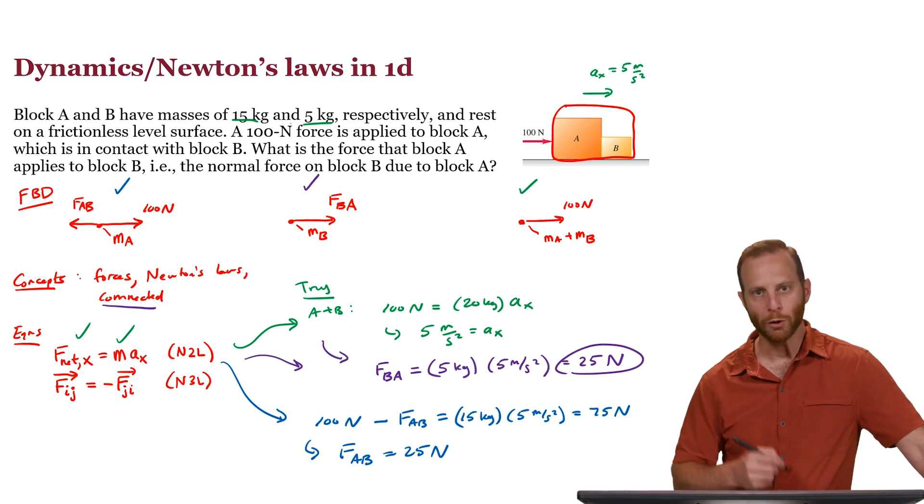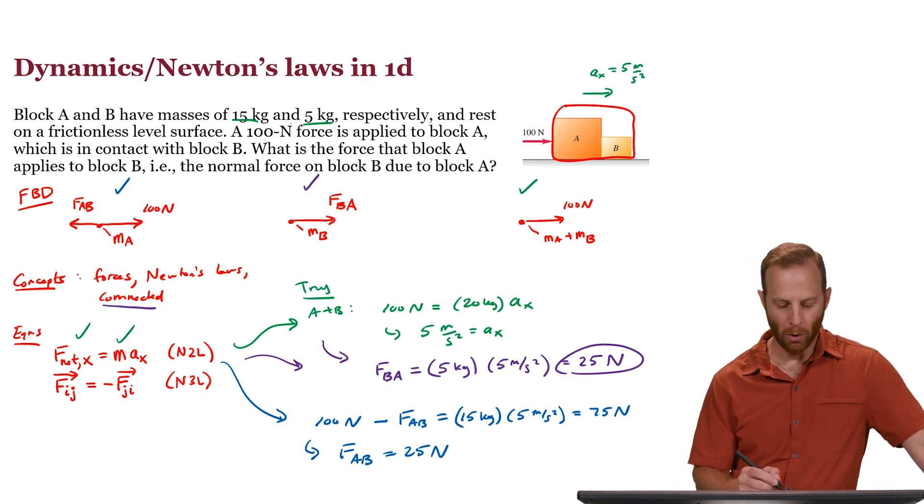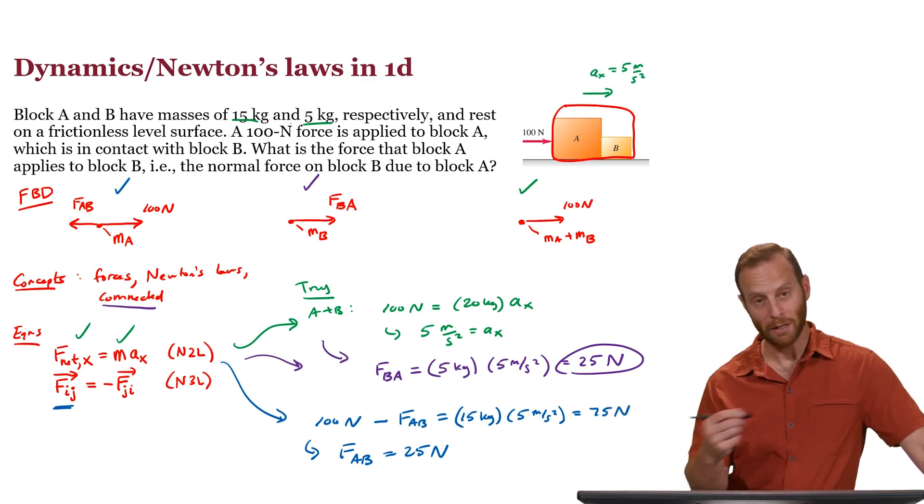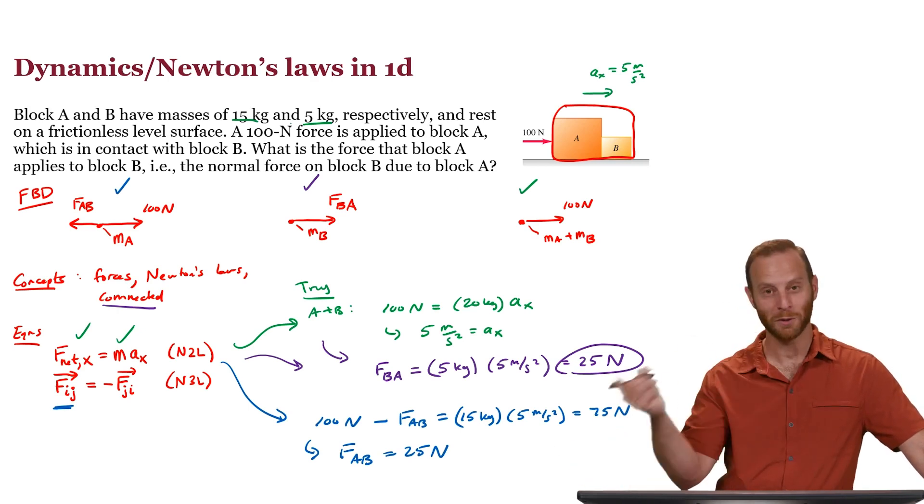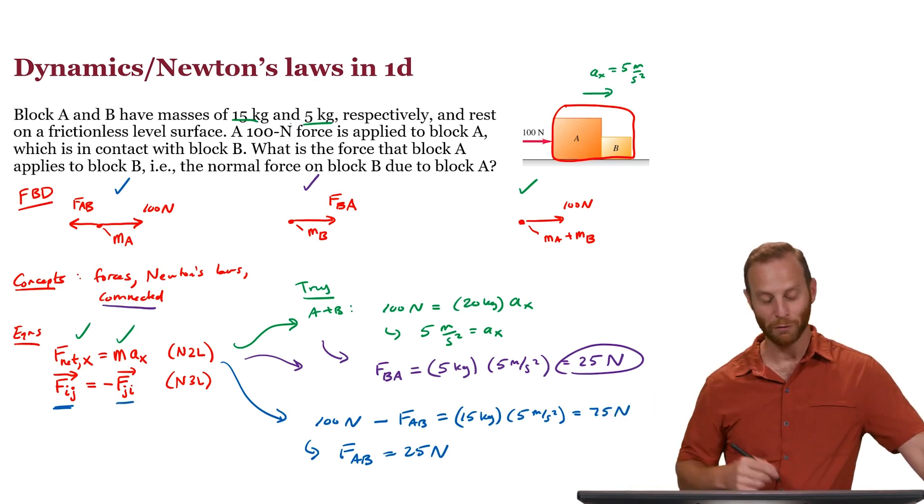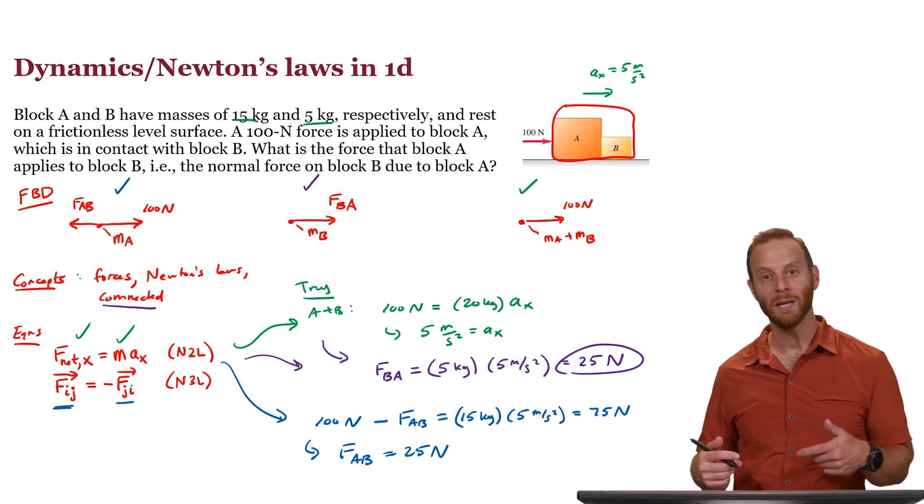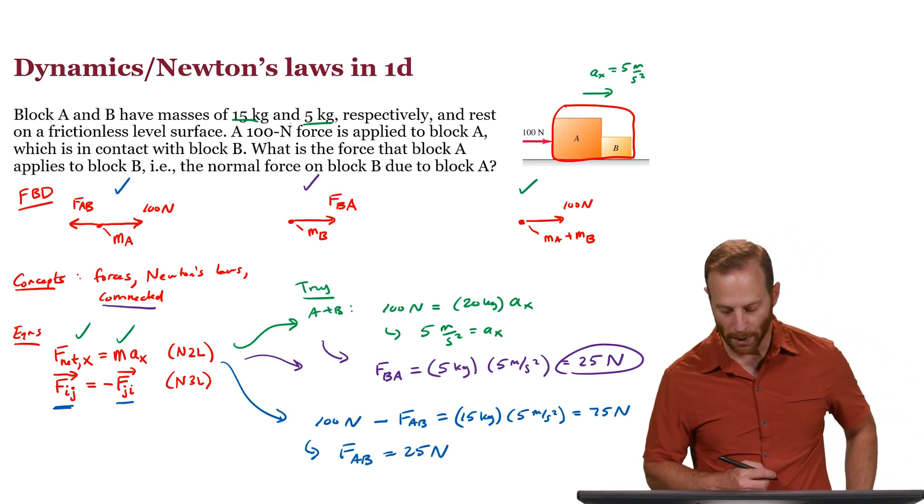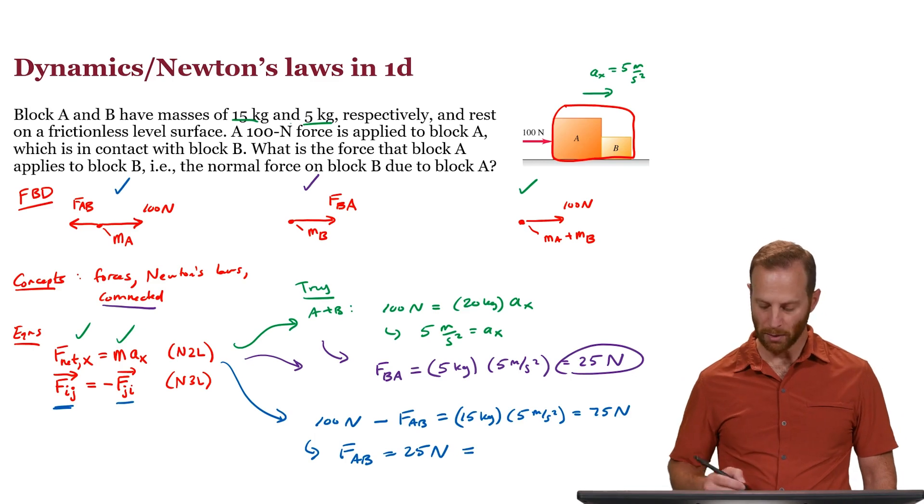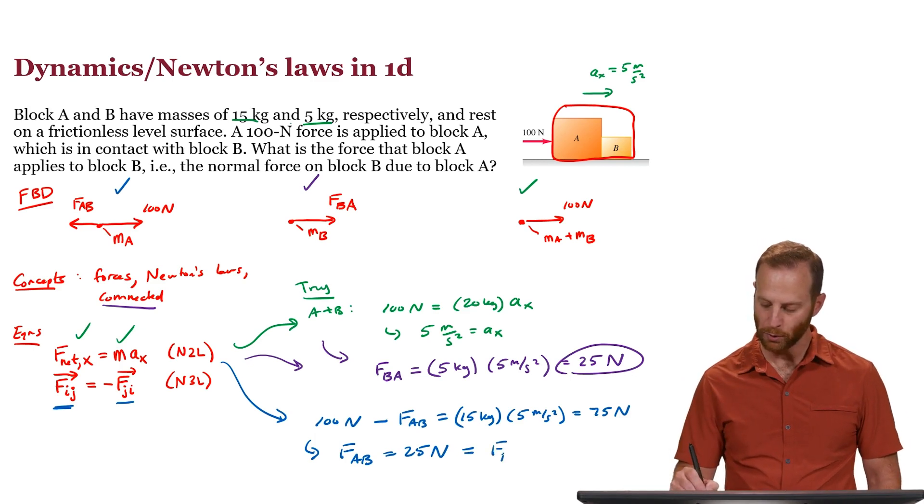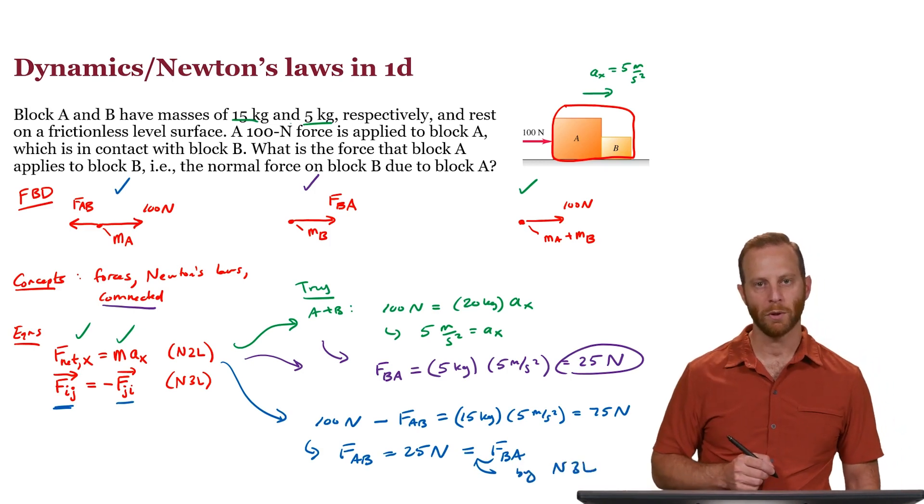And here's where Newton's third law comes into play. We know that the force on any object by a different object is equal and opposite to that force's object, the force of that object back on it. In other words, the force of object A on B is equal and opposite to B on A. Therefore, the magnitudes of these forces should be the same, so FAB should be equal to FBA. That is by Newton's third law, which confirms the 25 newton result.